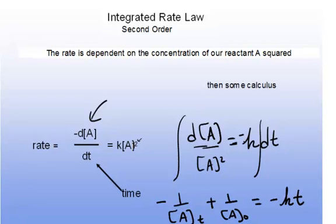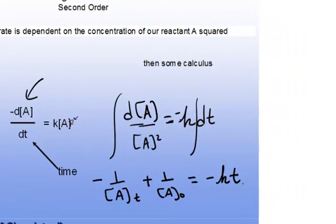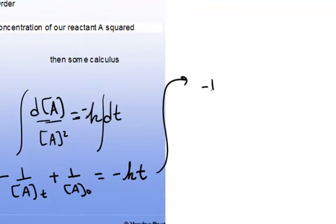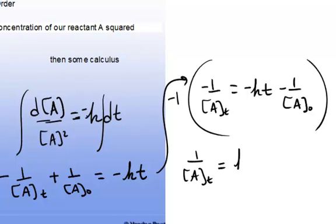I can rewrite this equation by bringing the 1/[A] to the other side into y = mx + b format. We get -1/[A]_t = -kt - 1/[A]₀. Multiplying the whole equation by -1, we end up with 1/[A]_t = kt + 1/[A]₀.